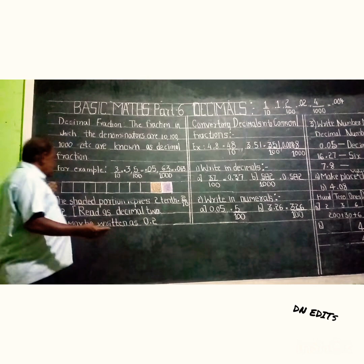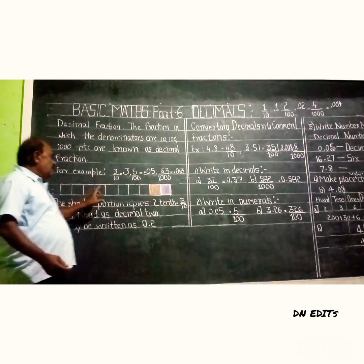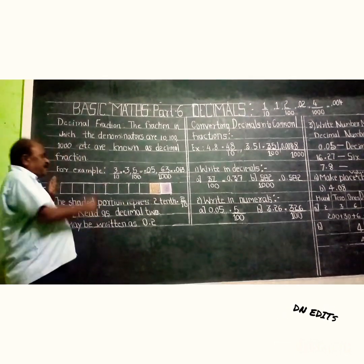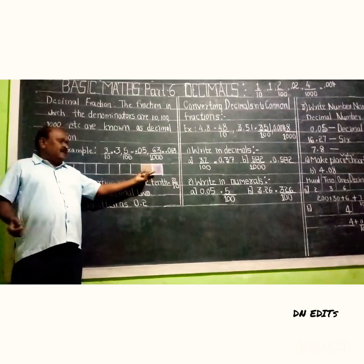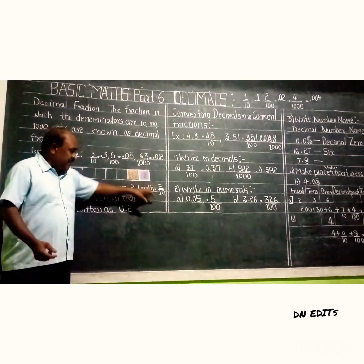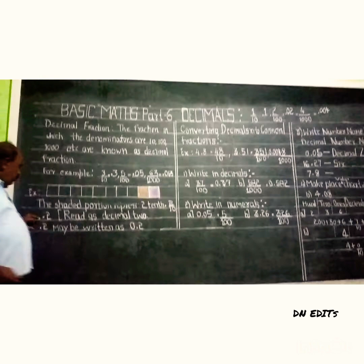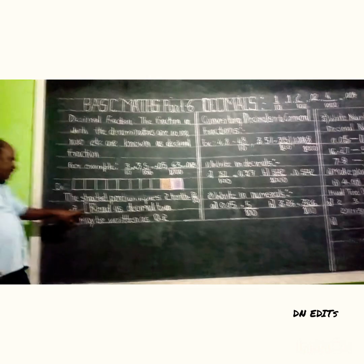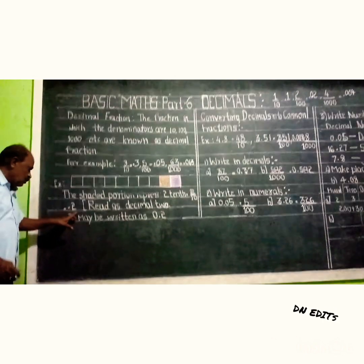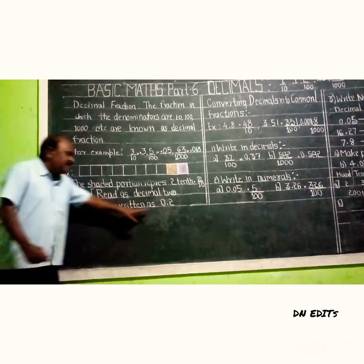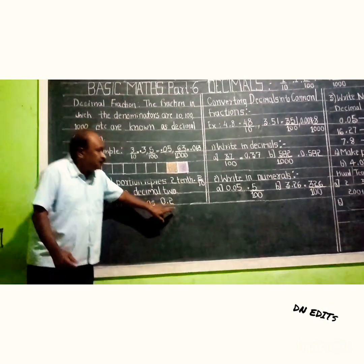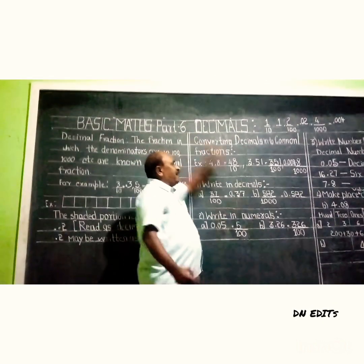In the picture I have shown here, there are ten square boxes. We have shaded two of them. The shaded portion represents two-tenths, which means 0.2 — you can read this as 'decimal two.' This is the decimal symbol. Point two may also be written as zero point two; there is no difference between point two and zero point two.